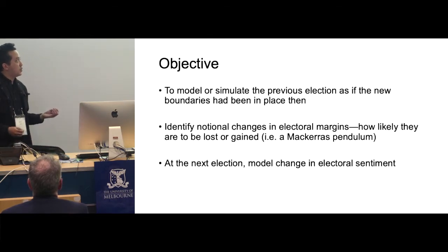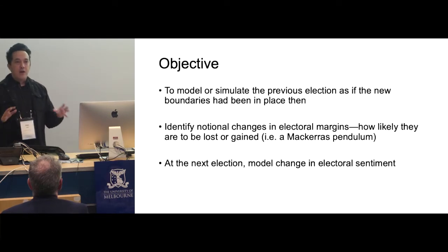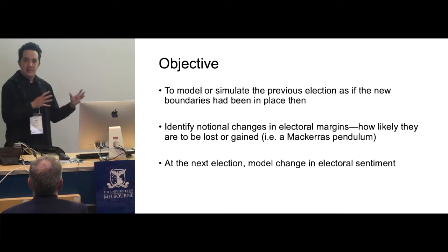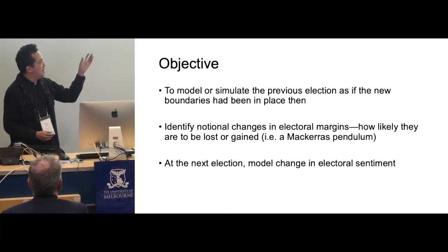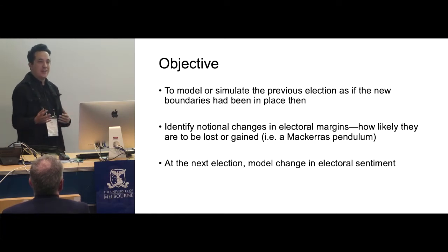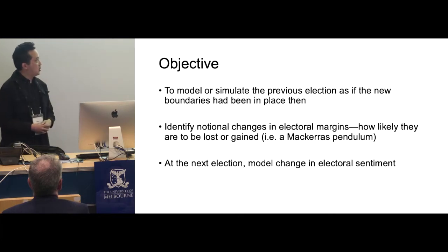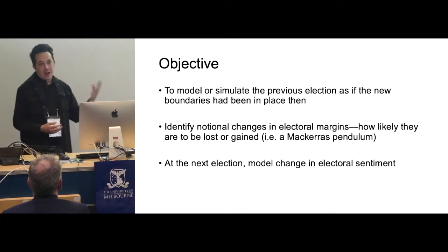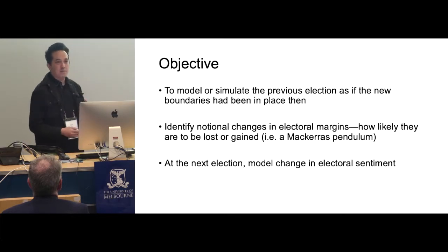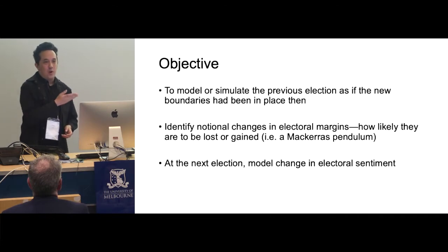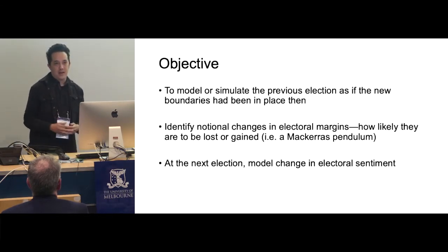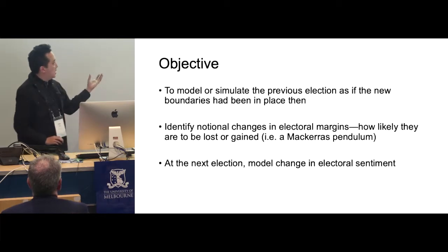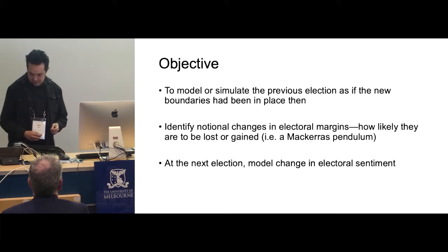The objective of what we want to do is to model or simulate the previous election as if the new boundaries that have been confirmed and gazetted had been in place at the previous election — so we're talking the last election in 2016 for the federal elections. We want to identify notional changes in electoral margins: who would have won that seat, how much they would have won it by, and how likely seats are to be lost and gained. You can build a Macarios Pendulum — a particular Australian invention by Malcolm Macarios, the psephologist who devised a pendulum where a uniform electoral swing gives you an idea of how many seats will be lost or won. That means when the next election is held in 2019, we can model the change in electoral sentiment.